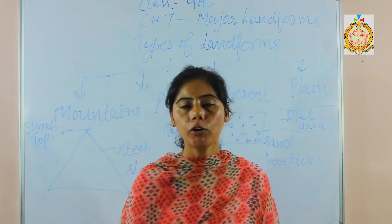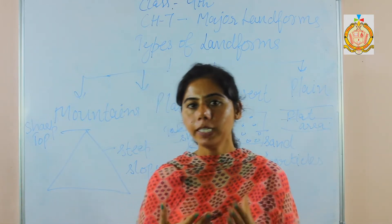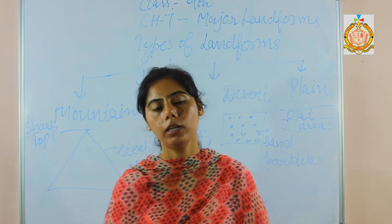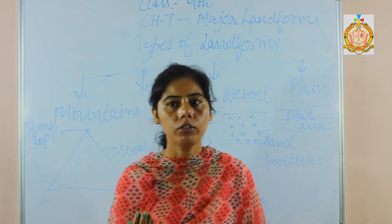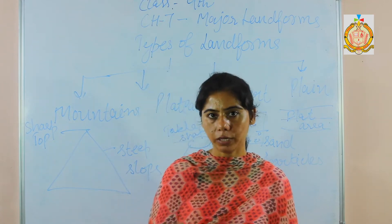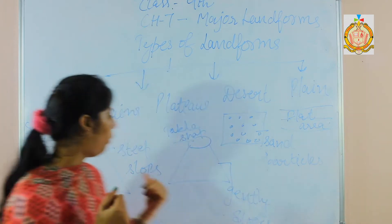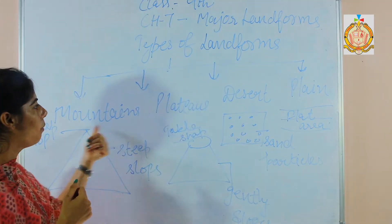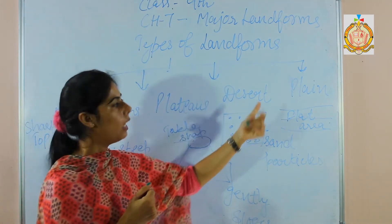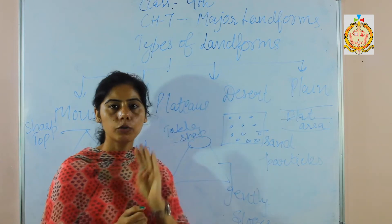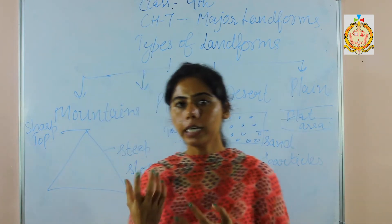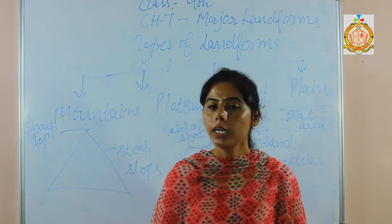Landforms means physical features of the earth's surface. It includes mountains, plateaus, deserts, and plains. So the major landforms are divided into 4 categories.